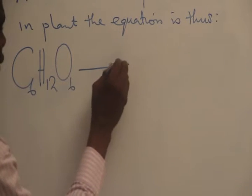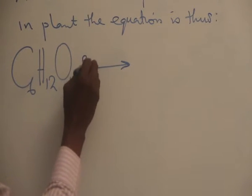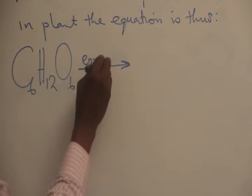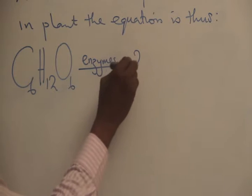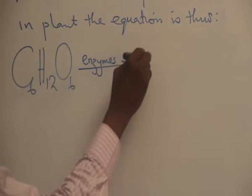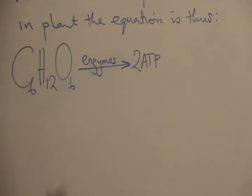With the action of only enzymes, this is broken down to produce only two molecules of ATP. Compare that to 36 or 38 molecules of aerobic respiration.